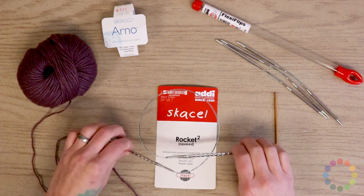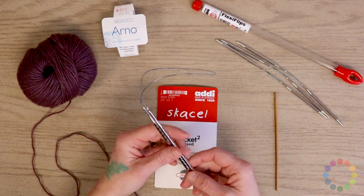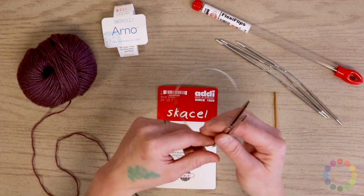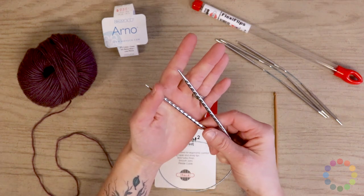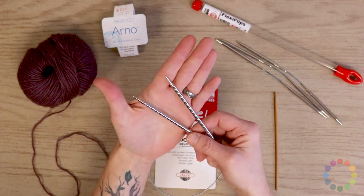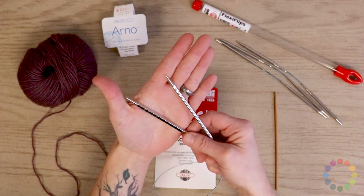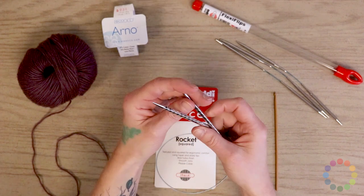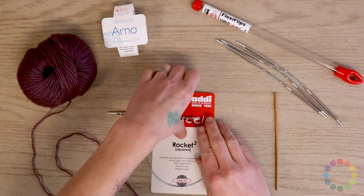We've got the rocket squared needle here so if you're a member of our Needles and Notions Club, this is the needle that you got for this installment and you can see these very pretty square needles here. But the cast on that we're learning actually does not use this needle, so I'm going to go ahead and set this aside.